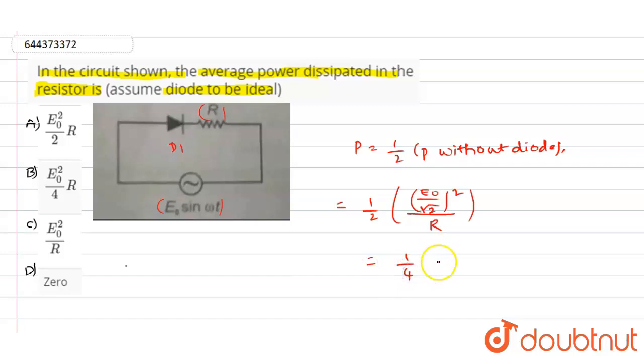So we can write this as E naught square divided by 4 into R simply. So this is the value of the power dissipated in the resistor.